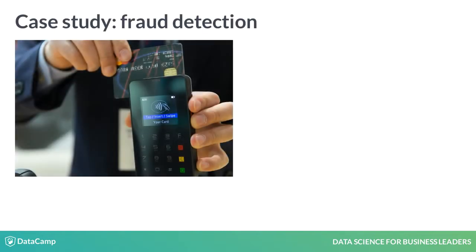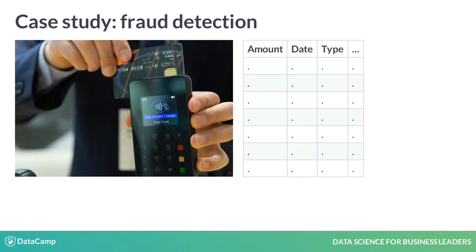Suppose you work in fraud detection at a large bank. You'd like to use data to determine the probability that a transaction is fake. To answer this question, you might start by gathering information about each purchase, such as the amount, date, location, purchase type, and cardholder's address. You'll need many examples of transactions including this information, as well as a label that tells you whether each transaction is valid or fraudulent. Luckily, you probably have this information in a database.